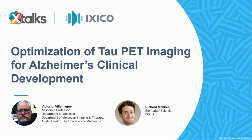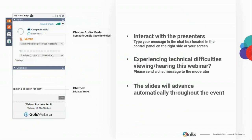Good day to everyone joining us and welcome to today's X-Talks webinar. Today's talk is entitled 'Optimization of TAU PET Imaging for Alzheimer's Clinical Development.' My name is Sonia Hunt and it's my pleasure to be your X-Talks moderator for today. This webinar will run for approximately 60 minutes and includes a Q&A session. Please submit questions using the questions chat box, located in the control panel on the right-hand side of your screen.